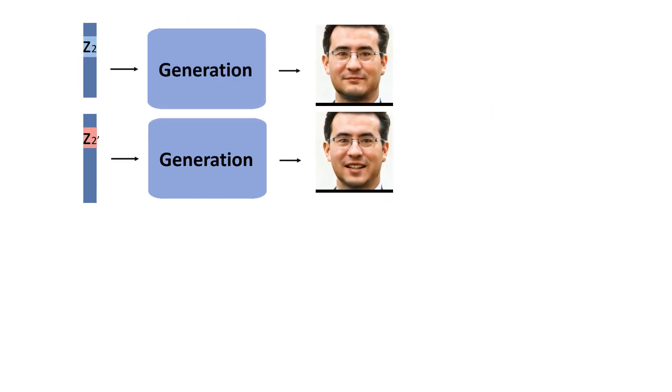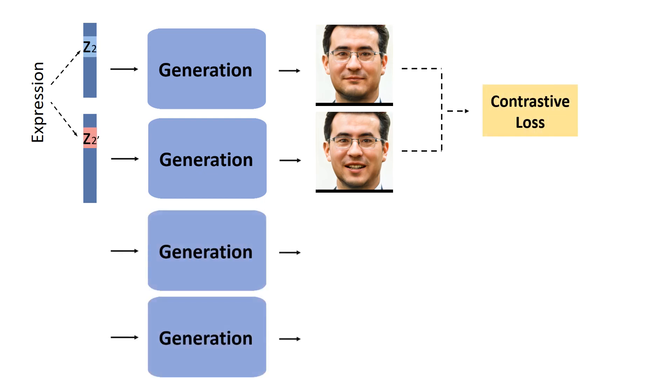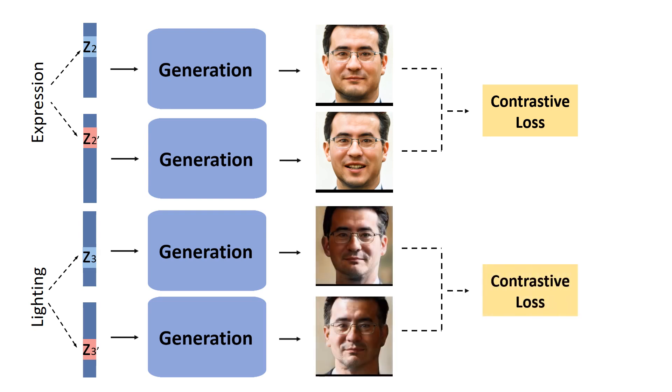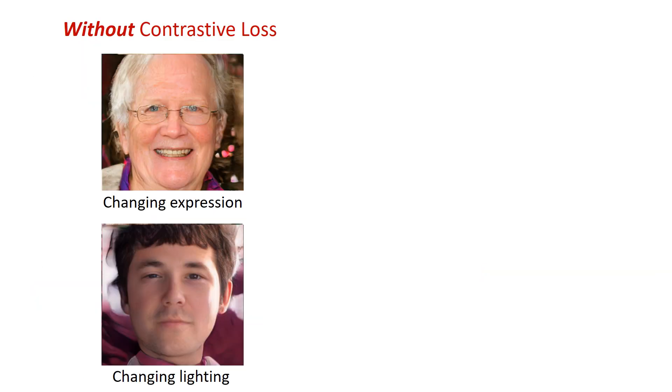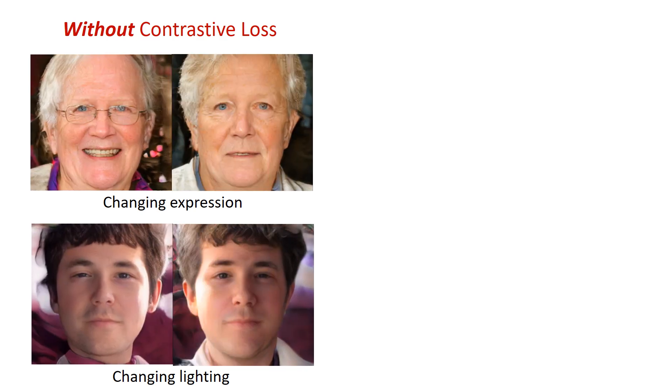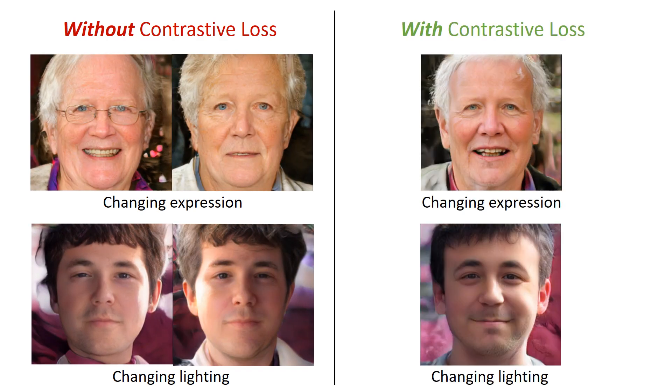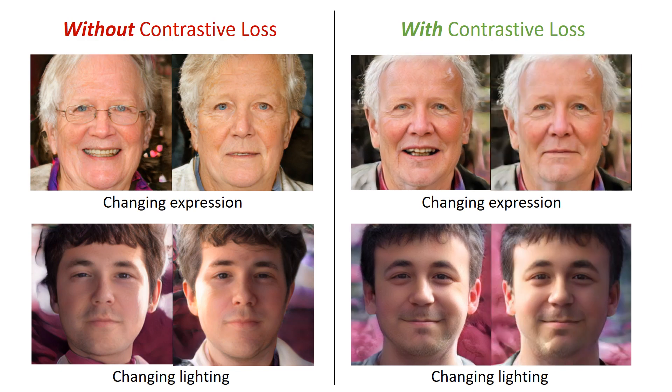To enhance disentanglement, we further enforce the invariance of each factor on the generated images in a contrastive manner. We alter one latent variable while keeping others unchanged, and require the differences on the generated image pair relate only to that latent variable. The ablation study shows that using imitative losses alone cannot achieve satisfactory disentanglement. Adding our contrastive losses can greatly improve the performance.